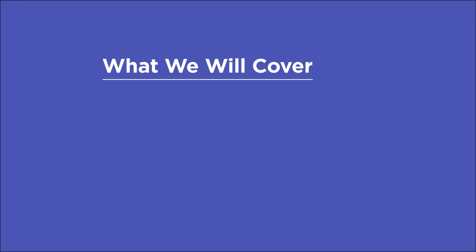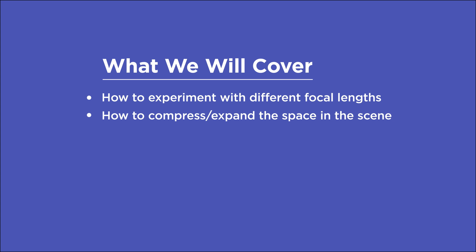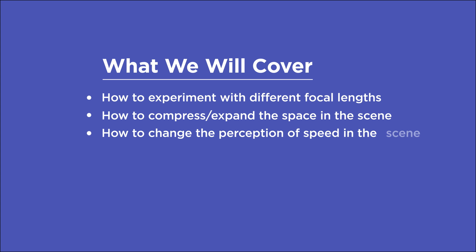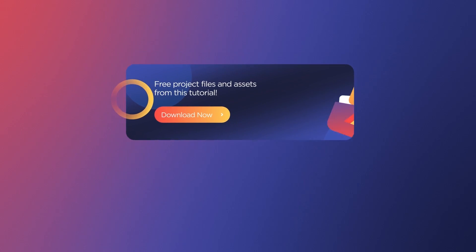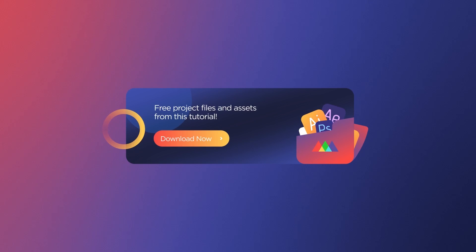In this video you'll learn how to experiment with various focal lengths until you find the one that's right for your composition, compress or expand the space within your scene, get familiar with the various properties that come with each unique focal length, and change the perception of speed of the camera depending on your lens choice. If you want more ideas to improve your renders, make sure to grab our PDF of 10 tips in the description. Now let's get started.